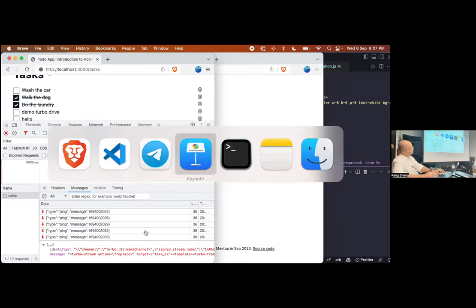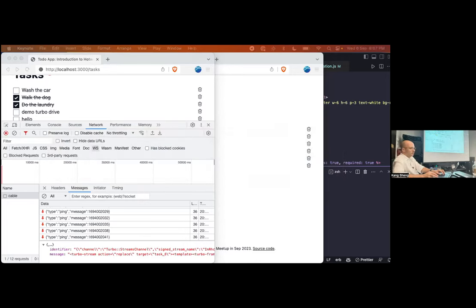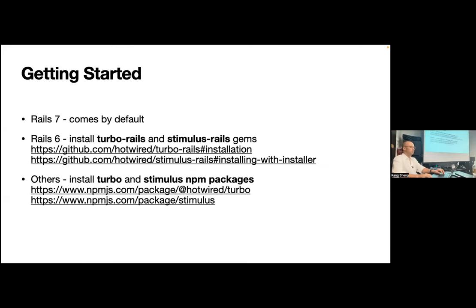How do we start using this today? If you're using Rails 7, this already comes by default — you don't need to do anything else to start using Turbo Drive, it's already included. Turbo Frames and Turbo Streams you can read the documentation and start using today. With Rails 6 there are two gems: the turbo-rails gem and stimulus-rails gem. In other non-Rails applications you can still use them via the npm package versions — you'd lose out on the conventions but it would still work in a similar way.